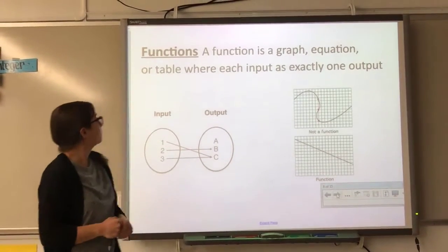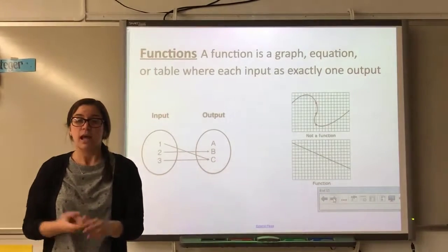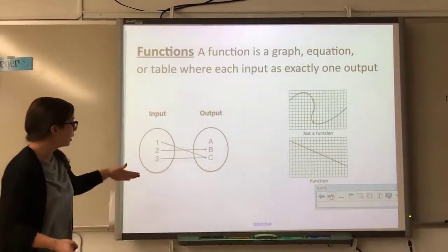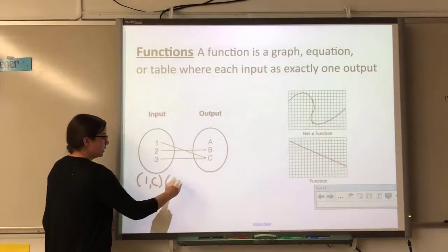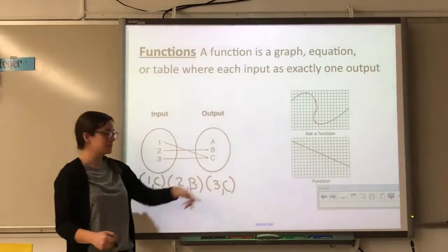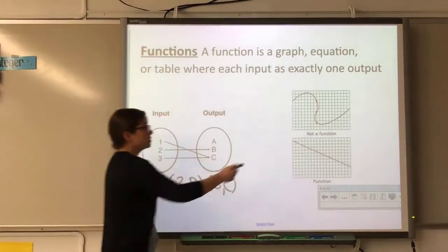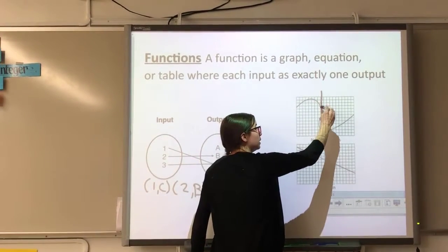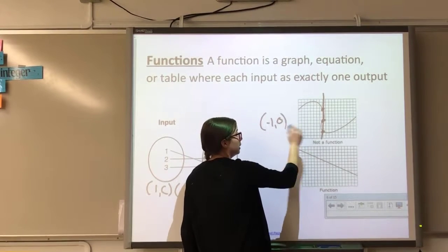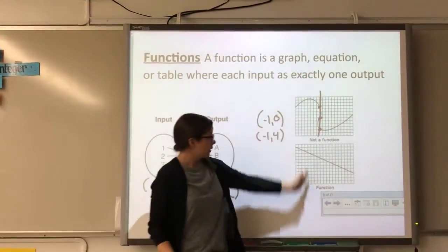Now we're ready for our function review. A function passes the vertical line test and none of the x-values repeat. A function is a graph, equation, or table where each input has exactly one output. For example, ordered pairs (1,c), (2,b), (3,c) — none of the x-values repeat, so it's a function. Your y-values can repeat; your x-values cannot. If a graph doesn't pass the vertical line test — for instance, having two points with the same x — it's not a function.